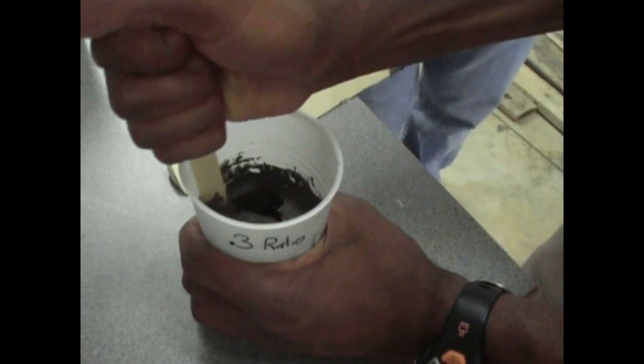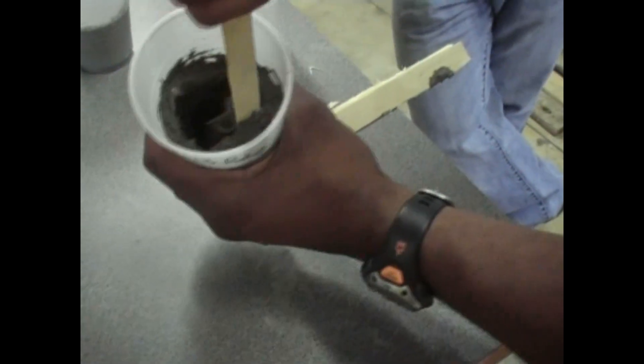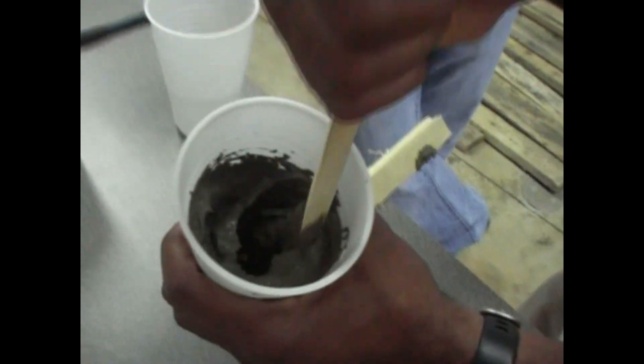The 0.3 ratio is very hard to mix. That's 70% cement and 30% water. Now look at the difference. Look at the 0.6 ratio.